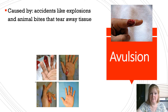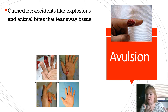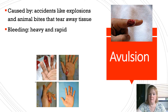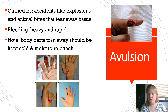An avulsion is caused by accidents like explosions and animal bites that literally tear away tissue. It can result in complete amputation — a finger or an entire hand could be blown off, or just a portion of tissue. The bleeding is going to be heavy and rapid. Body parts that are torn away should be kept cold and moist, and you should get to an emergency room as quickly as possible to reattach them.